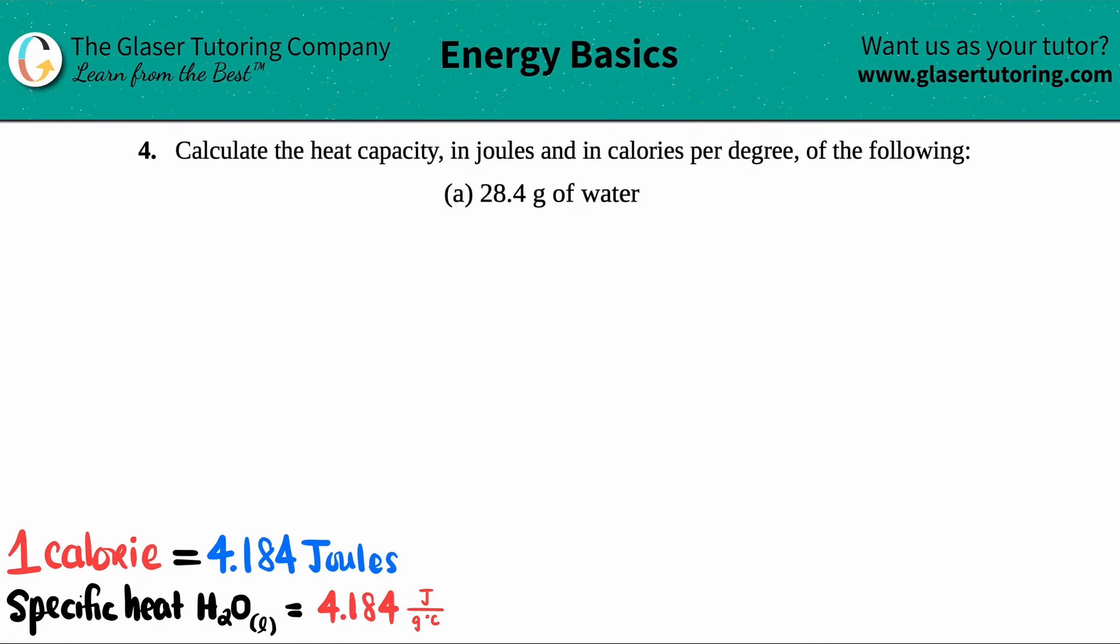Number four: Calculate the heat capacity in joules and in calories per degree of the following. In this case we have to find the heat capacity of 28.4 grams of water.